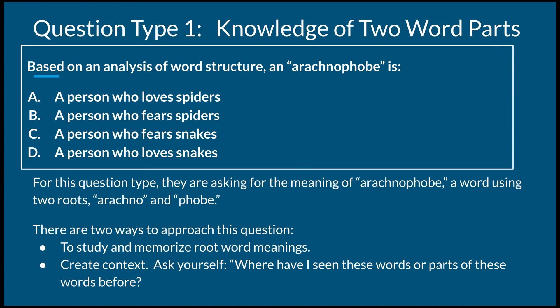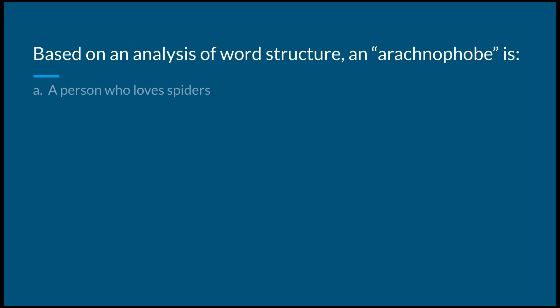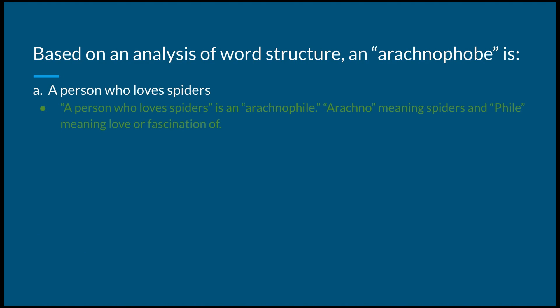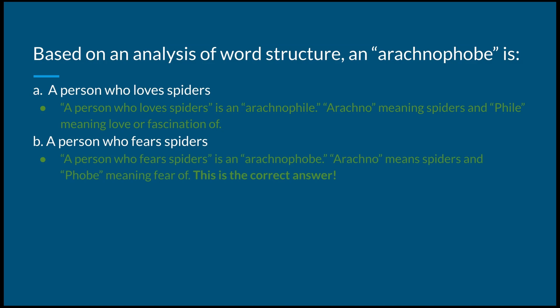Let's break down our question and answers. A — a person who loves spiders — is an arachnophile. There we're using that first part of the word, arachno, but adding the root word phile to the end. Arachno means spiders, and phile means love or fascination of. B — a person who fears spiders — is an arachnophobe. Arachno means spiders, and phobe means a fear of. That's our correct answer.